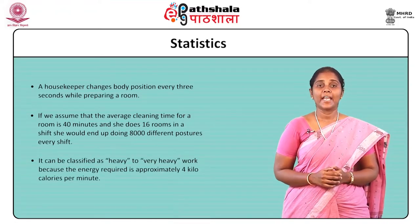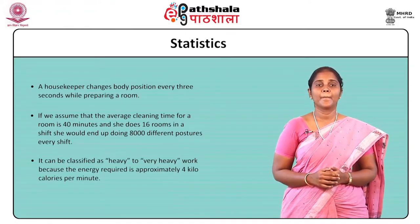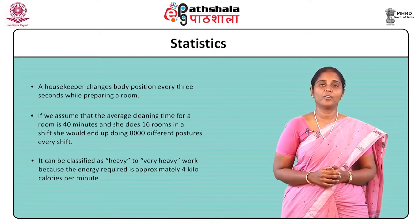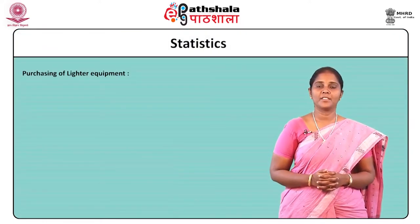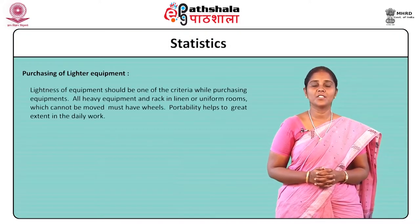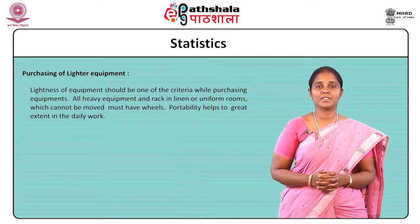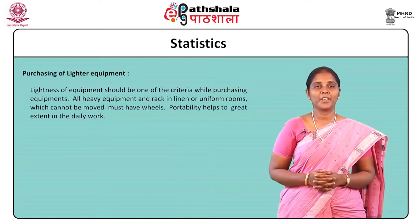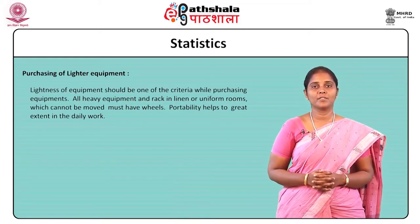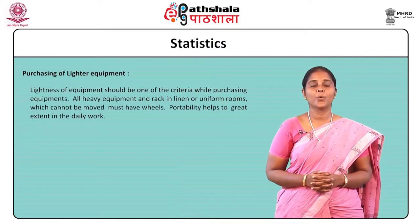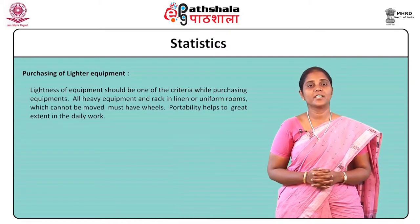This work can be classified as heavy to very heavy work because the energy required is approximately 4 kilocalories per minute. So, how do we reduce the physical stress on the housekeeping personnel? Let us see what can be done by the management. First, purchasing of lighter equipment — lightness should be one of the criteria while purchasing. All heavy equipment and racks in linen and uniform rooms which cannot be moved must have wheels, as portability helps to a great extent in daily work.